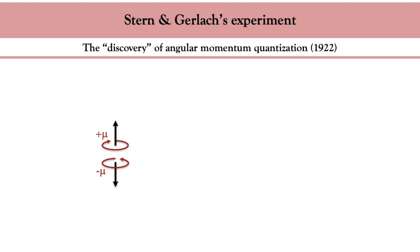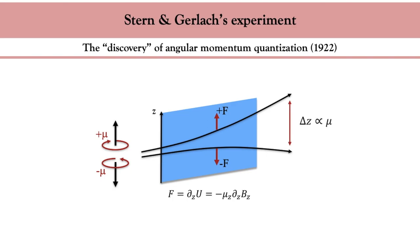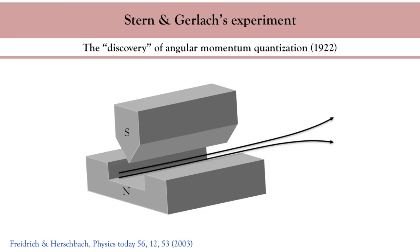If one manages to send a beam of electrons, or any particle with a non-zero magnetic moment, through a spatial gradient of magnetic field, this spatial gradient should induce a force on the moving magnetic moment and deflect their trajectory. As a consequence, it should be possible to deduce the magnitude of the particle's angular momentum from the deviation of its trajectory. They designed an apparatus in which a beam of silver atoms is sent between the two poles of a magnet, creating a magnetic field gradient along the vertical direction. At the exit of the apparatus they placed a glass plate to record the impact of the silver atoms.